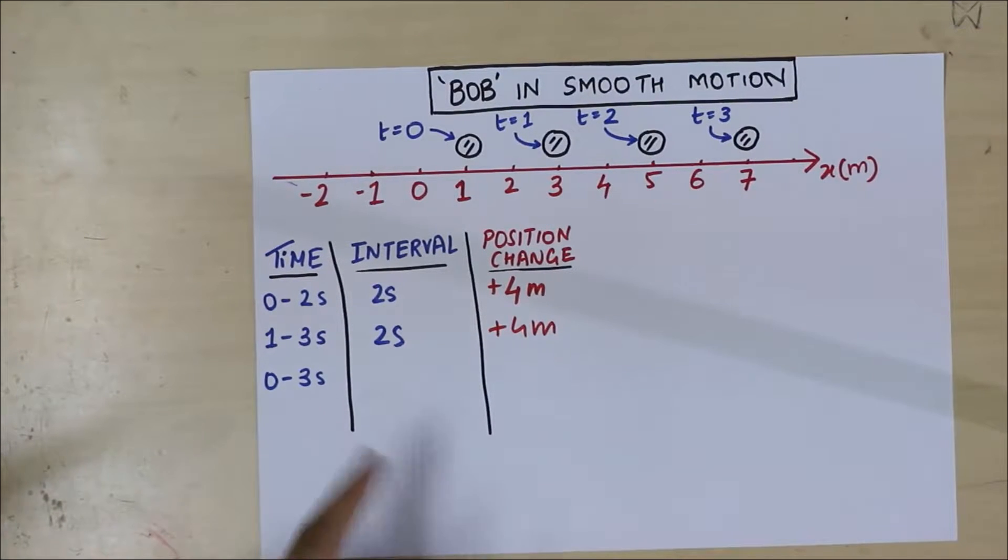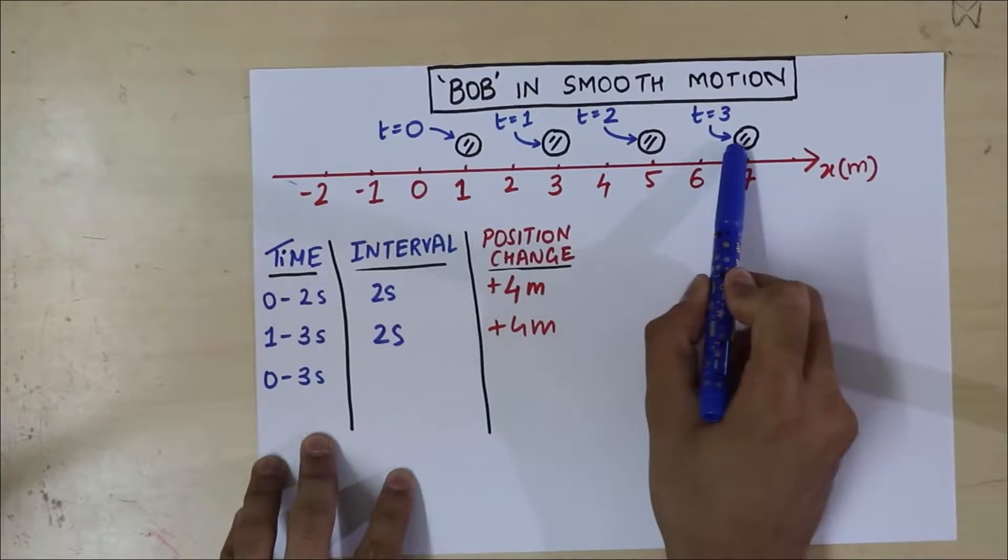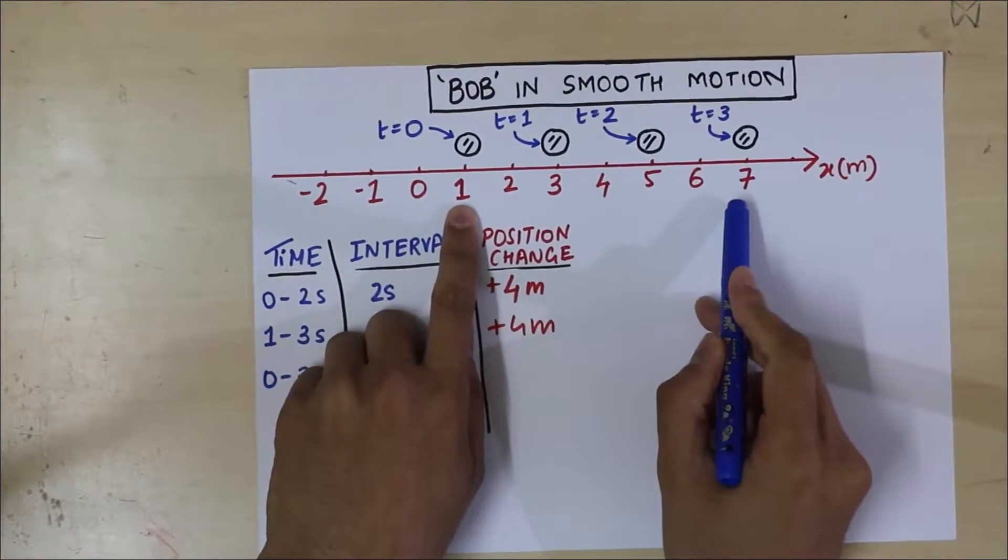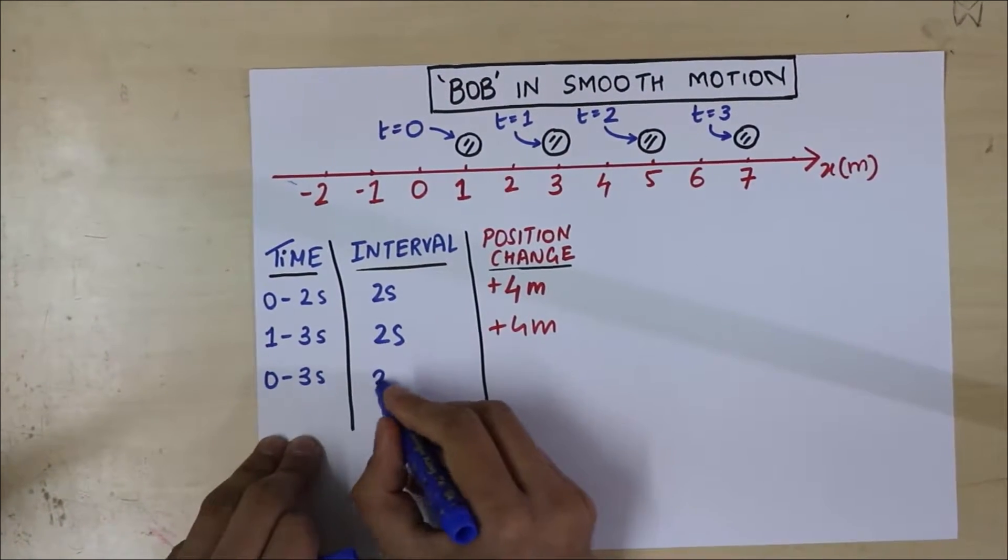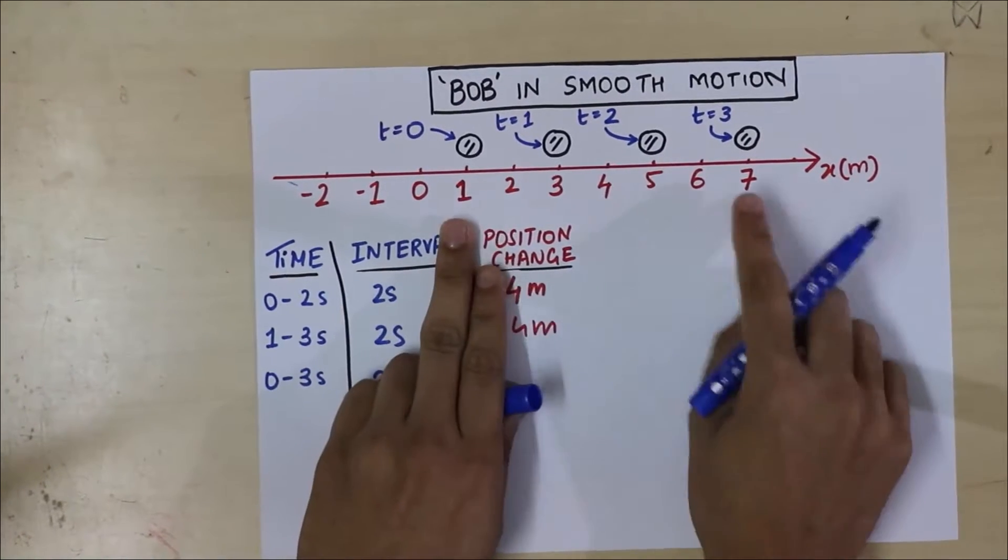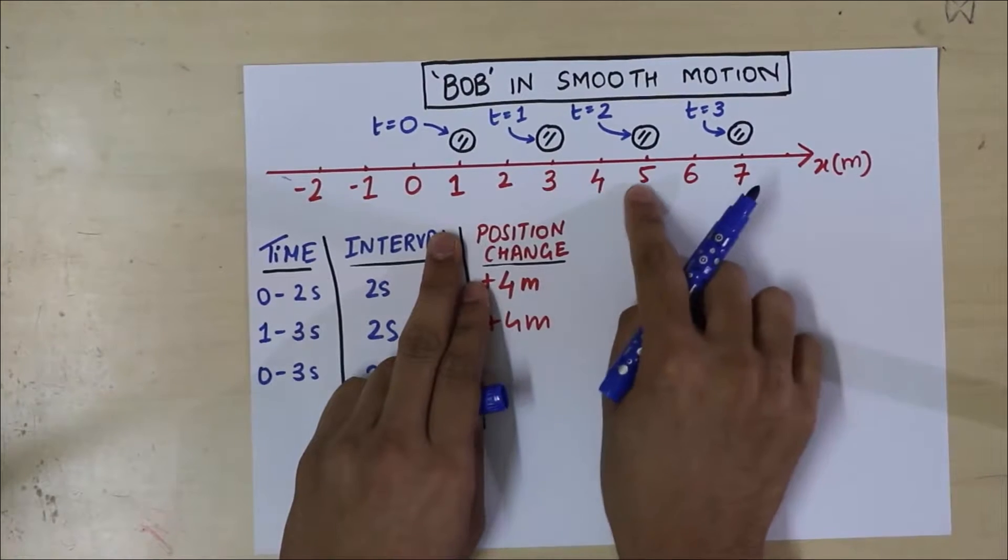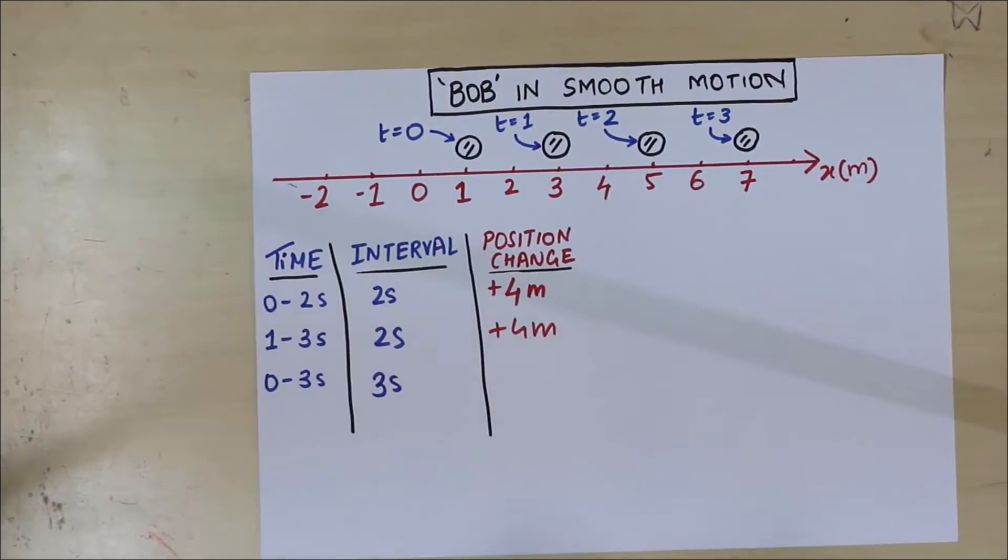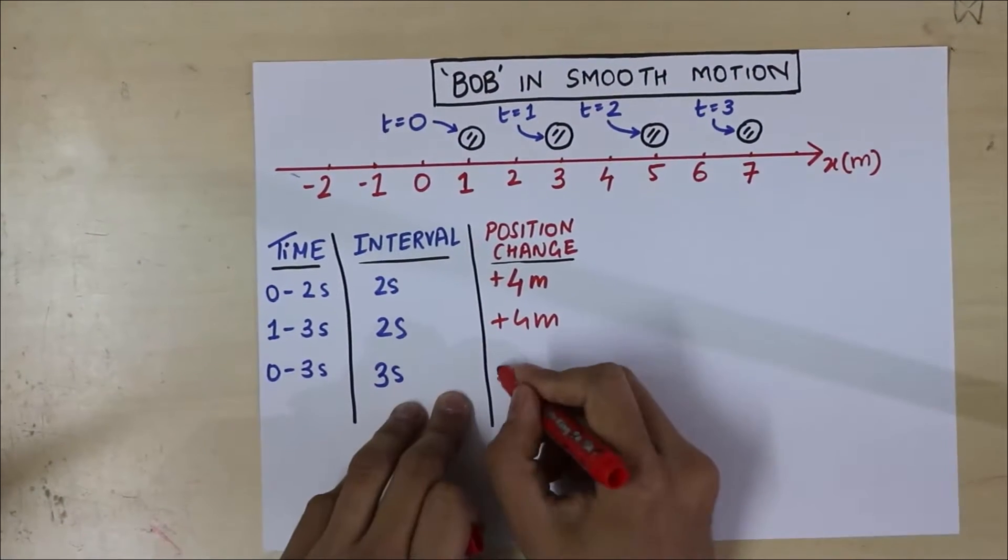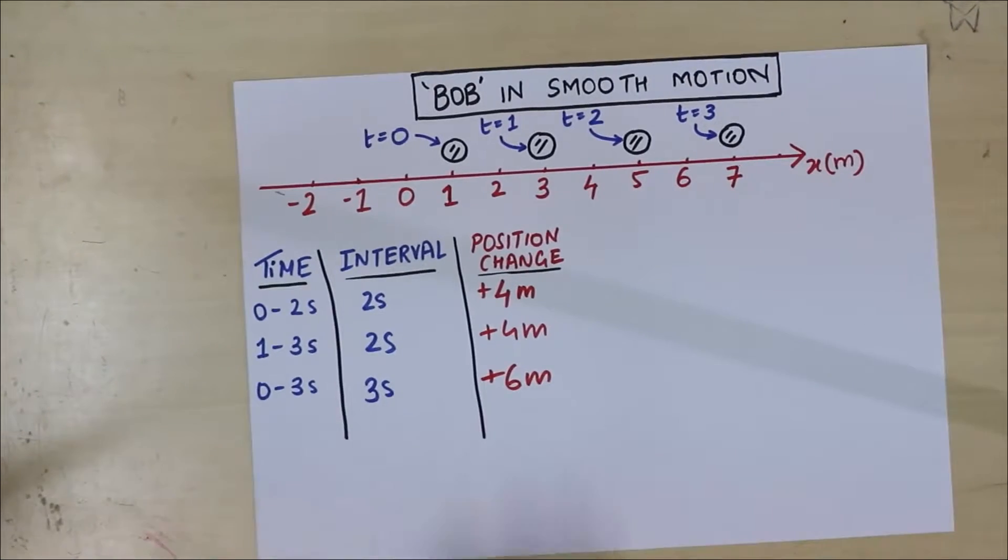Let's look at one final one. Let's look at one final time. It's from 0 to 3. And you can see from 0 to 3 is a time span of 3 seconds. And what is the change in position? That's I think 1, 2, 3, 4, 5, 6. 6 meters. So again, that's a plus 6 meters.